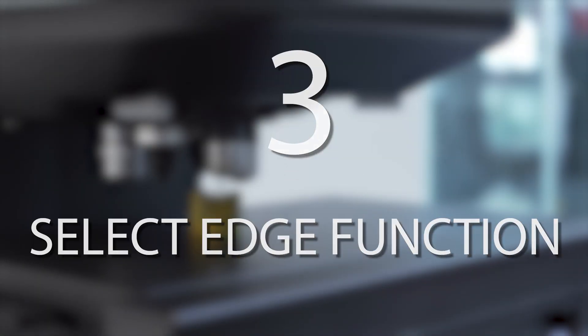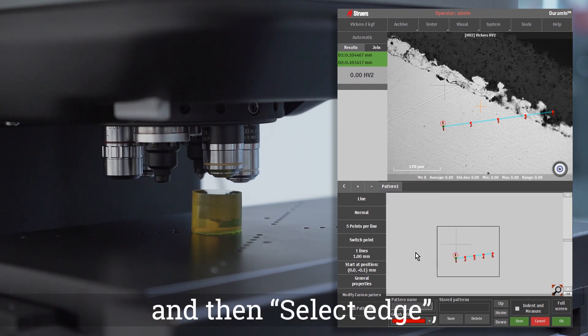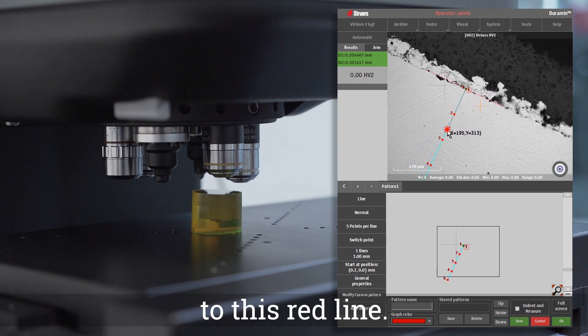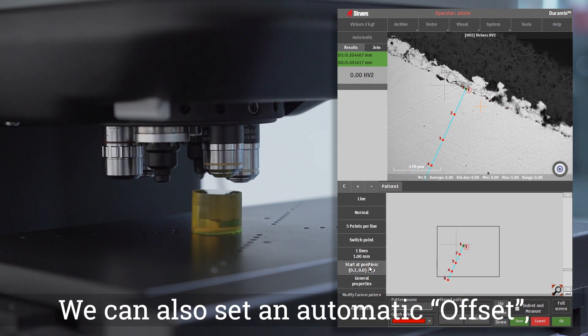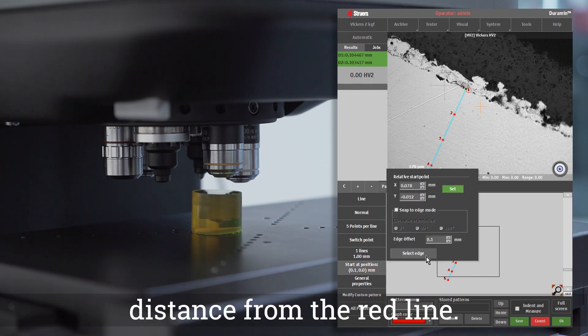Select Edge Function. If we go to Start at Position and then Select Edge, we can position a pattern perpendicular to this red line. We can also set an automatic offset, so our pattern will be at a specific distance from the red line.